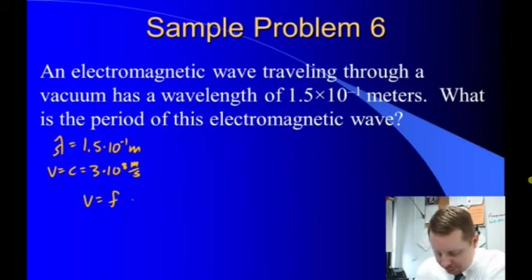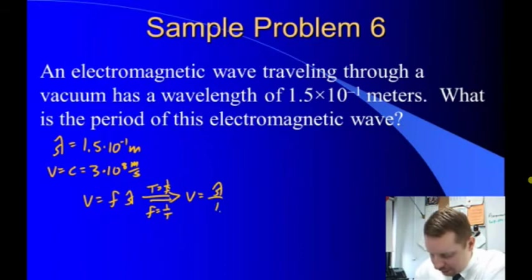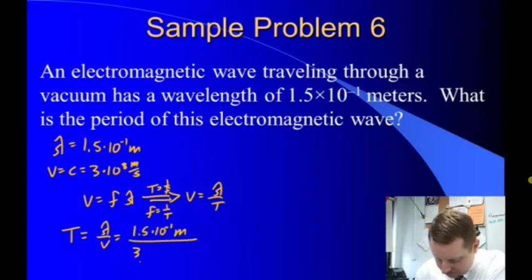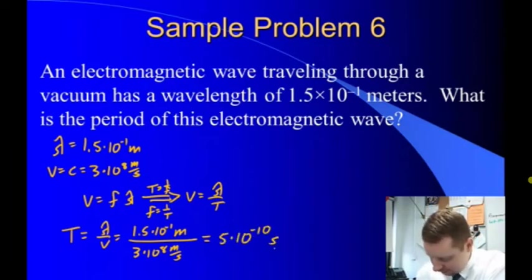The wave equation says velocity is equal to frequency times wavelength. But note that period is one over frequency, or frequency is one over period. Therefore we could write this as velocity equals wavelength over period. If we rearrange for period, period is going to equal wavelength over velocity, or 1.5 times 10 to the minus one meters divided by three times 10 to the eighth meters per second, which gives us a period of 5 times 10 to the minus 10 seconds.